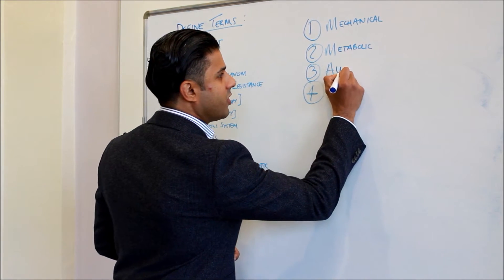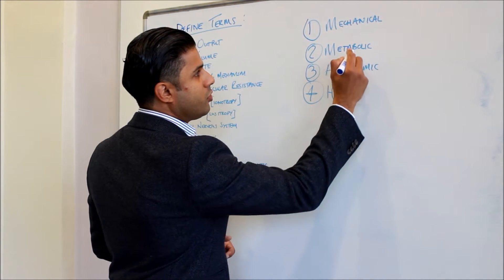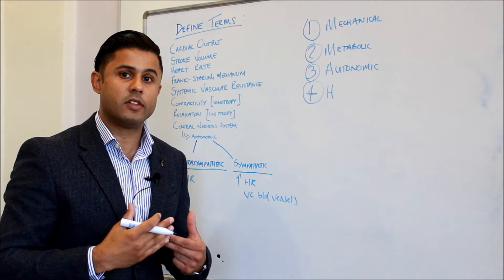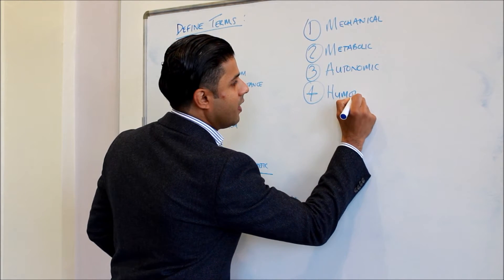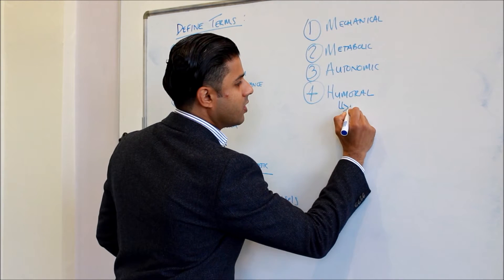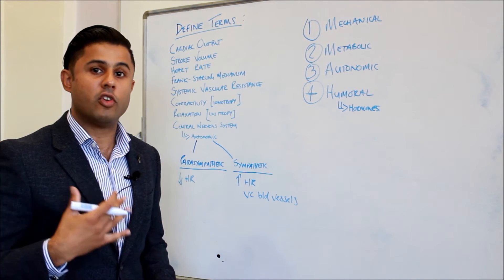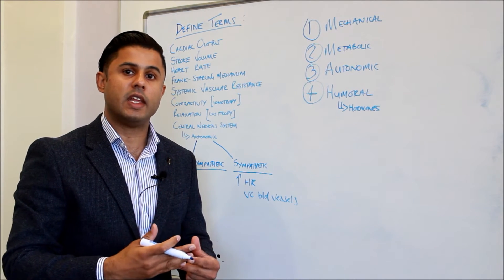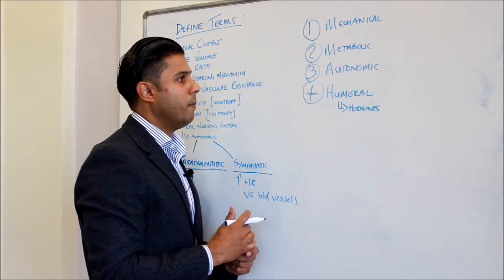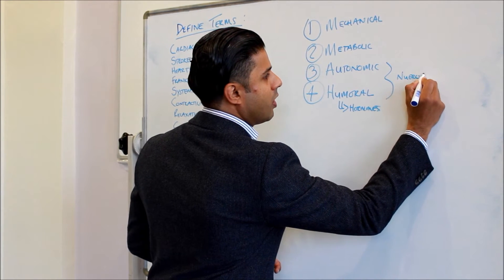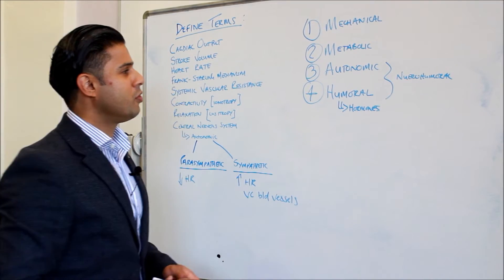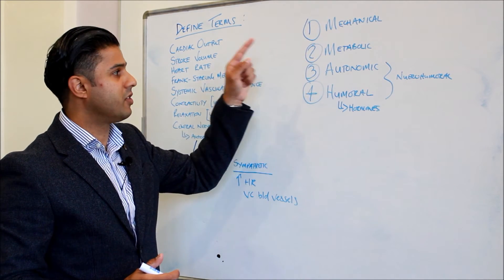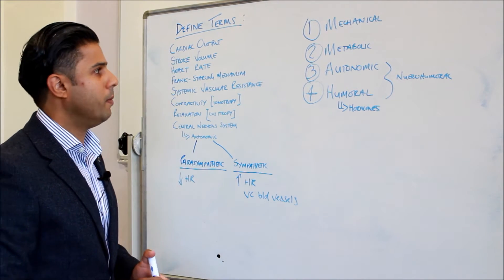Then we progress to the autonomic changes. The metabolic and autonomic changes are related to each other. And finally, we'll have humoral changes — the release of various hormones. The most important for the cardiovascular system is the increase in adrenaline. These humoral or hormonal changes cause a supplementation or enhancement of the autonomic nervous system effects on the body. These two combined are known as neuro-humoral changes. So those are the four components: mechanical, metabolic, autonomic, and humoral changes.